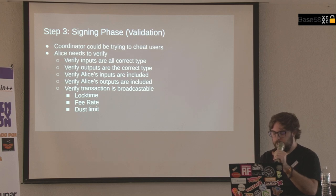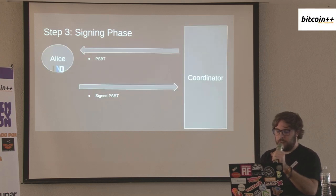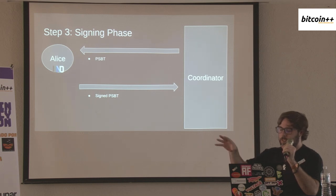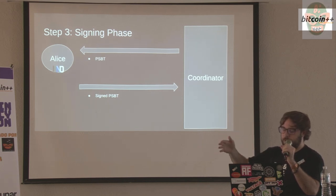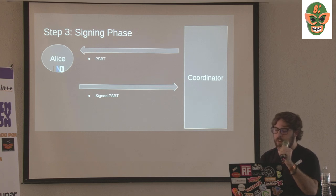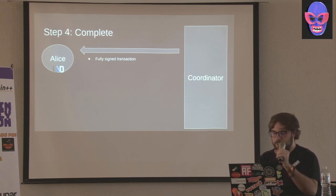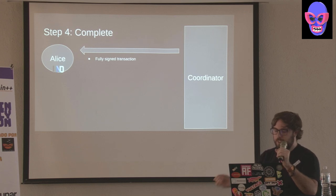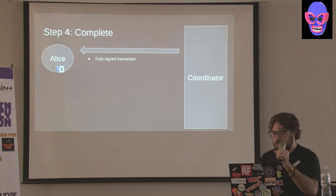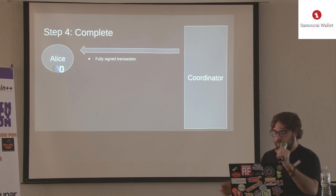If all that's good, Alice — if she's opening a Lightning channel — will validate it with her channel counterpart first, asking if opening the channel with this transaction is okay. If they give the okay, she'll sign it and send it back to the coordinator. Once everyone has signed, the coordinator creates the fully signed transaction, broadcasts it, sends it to all peers, and that's the completion of the round.